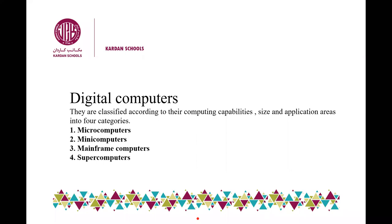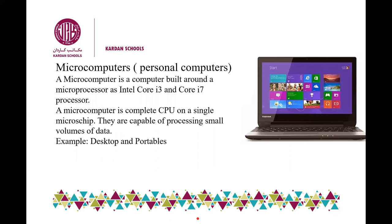The first category is microcomputers — micro meaning the smallest computers. Then we will discuss minicomputers, which are bigger than microcomputers. The third is mainframe computers, which are faster than the other two. And the best, most powerful computers are supercomputers. Let's talk about the first option: microcomputers.